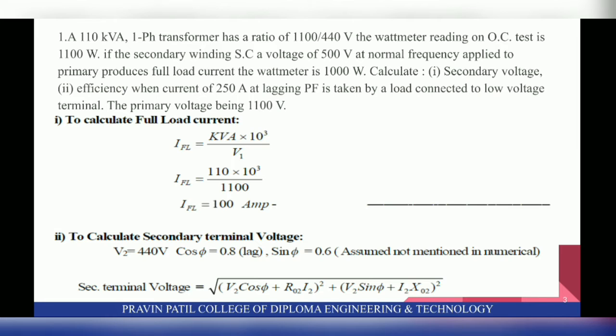The primary voltage being 1100 V. So first, to calculate full load current: IFL is equal to kVA × 10³ / V1. This is the formula to calculate full load current. So IFL = 110 × 10³ / 1100, so IFL becomes 100 Ampere.